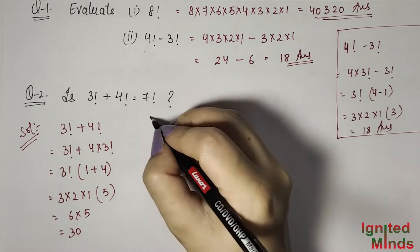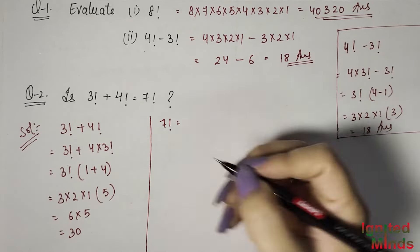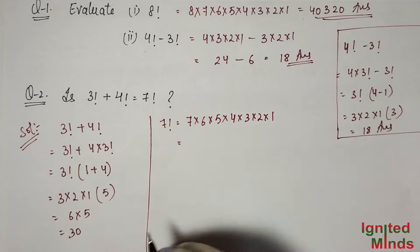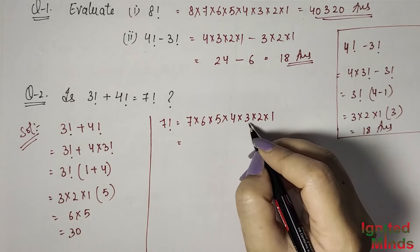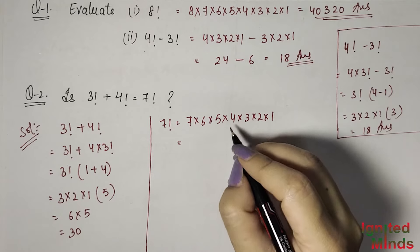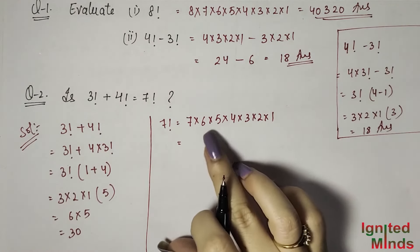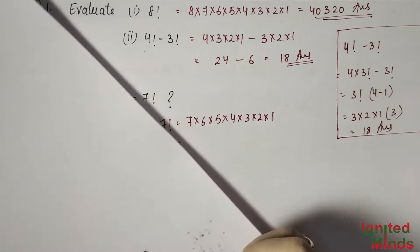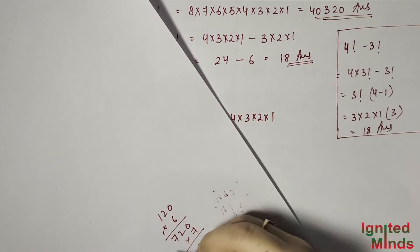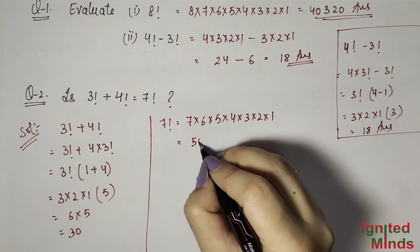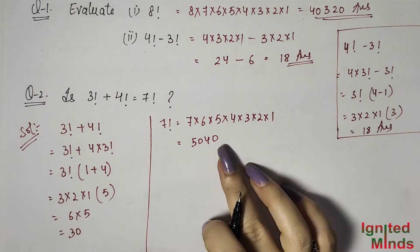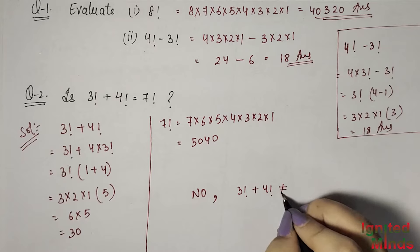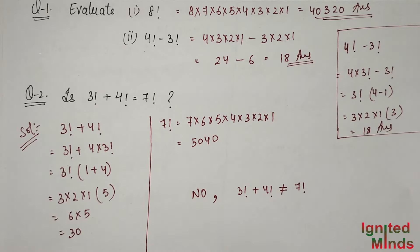Now let's compute 7 factorial: 7 × 6 × 5 × 4 × 3 × 2 × 1. Multiplying: 3 × 2 = 6, × 4 = 24, × 5 = 120, × 6 = 720, × 7 = 5040. So 3! + 4! equals 30, while 7! equals 5040. Therefore 3! + 4! is NOT equal to 7!.